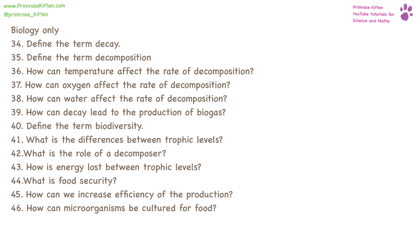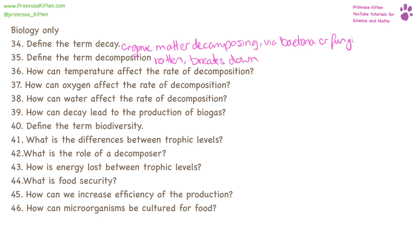Decay is where organic matter is going to decompose through bacteria or fungi. When something decomposes, it becomes rotten and breaks down. Temperature will affect decomposition because the hotter it is, the faster it will go. Most bacteria and fungi need oxygen to undertake decomposition — so if it's in an oxygen-free atmosphere, decomposition and decay won't happen. Water is essential for decomposition and decay to happen; if something is very dry or water has been removed from the atmosphere, that won't happen. Whenever you have something decaying or decomposing, there is going to be a mixture of methane and carbon dioxide produced, and this is going to be your biogas.